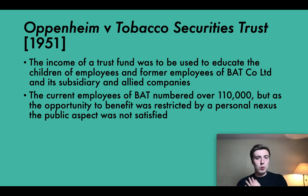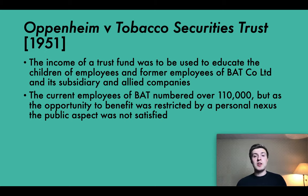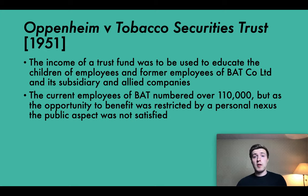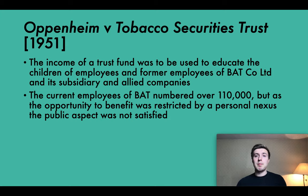Let's look at Oppenheim v Tobacco Securities Trust (1951). The income of a trust fund was to be used to educate the children of employees and former employees of BAT Co Ltd and its subsidiary and allied companies. The current employees of BAT numbered over 110,000. But as the opportunity to benefit was restricted by a personal nexus, the public aspect was not satisfied. The number of people who could benefit was huge, but the public aspect was not satisfied because the opportunity to benefit was restricted by a personal nexus. Therefore, the employees were not a sufficient section of the public in the context of education. The purpose did not satisfy the public aspect of the public benefit test, so it was not a charitable purpose and the trust was not a charity.